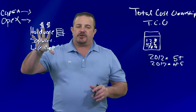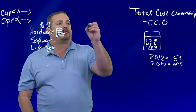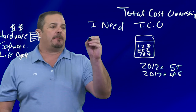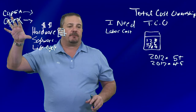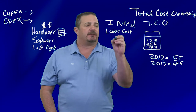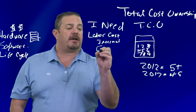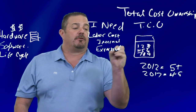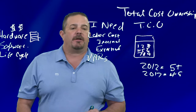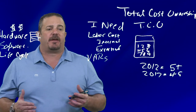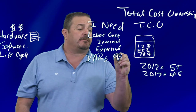The reality is, if I just get that piece of the equation, my total cost of ownership analysis is going to fail. I need a lot more — most importantly, labor cost. I need to know how much they're spending in the physical environment versus the virtual environment if they come with us. This includes both internal on-site staff and external resources, because a lot of customers buy solutions from VARs — value-added resellers — who handle implementation, setup, equipment, and service.